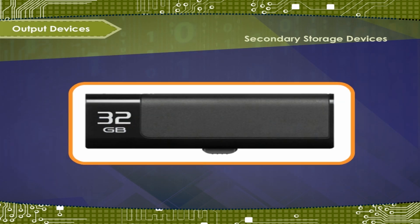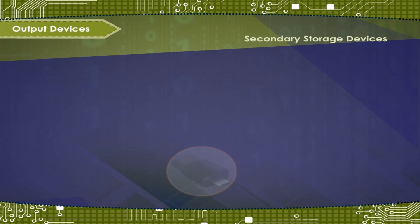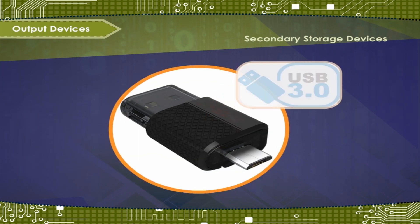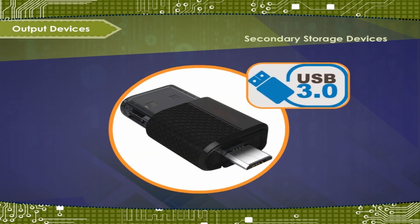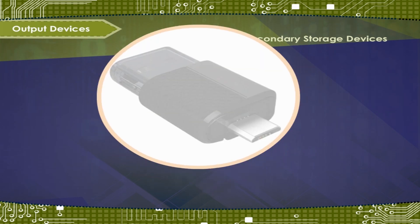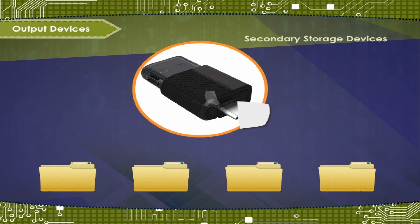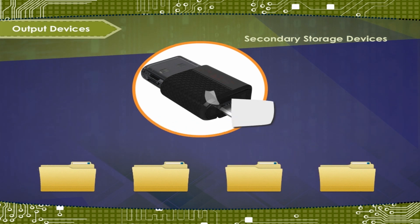Modern flash drives can store up to 32 GB of data. The newer technology USB 3, also called USB OTG, enables data transfer at a much faster speed ranging to 640 Mbps.